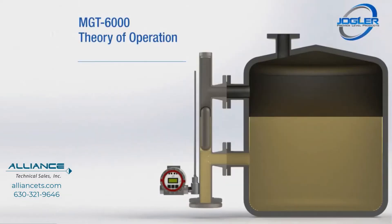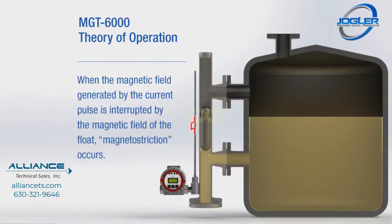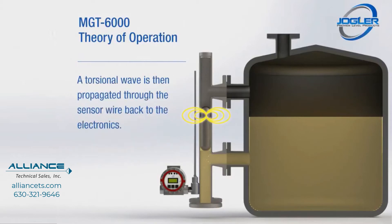The MGT-6000's electronics send a current pulse through the magnetostrictive sensor wire. When the magnetic field generated by the current pulse is interrupted by the magnetic field of the float, magnetostriction occurs. A torsional wave is then propagated through the sensor wire back to the electronics.